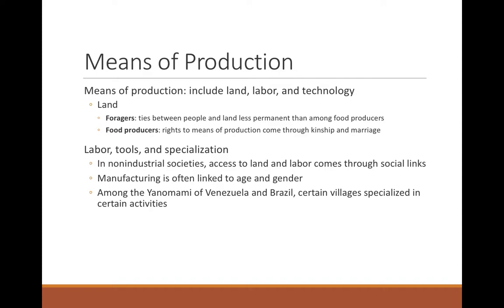We also see differential access through specialization. In non-industrial economies, access to land and labor comes from social links, but manufacture of certain items can be linked to age, gender, or social ties. Tools are made differentially by sex or age class. In larger populations like the Yanomami of Venezuela, we even get village specialization, where certain villages specialize in certain activities, building up a larger regional system of production.